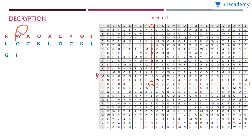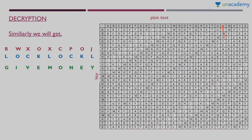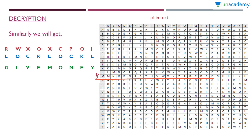For W with key O: find row O, locate W in that row — the corresponding column is I. So I is the plain text letter for W. For X with key C: find row C, locate X in that row — the corresponding column is V. So V is the plain text letter. Similarly, you find all the remaining letters.